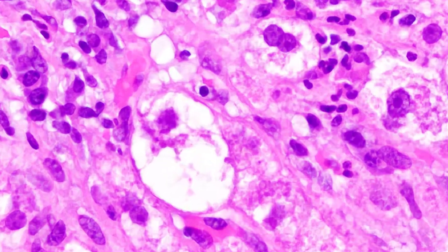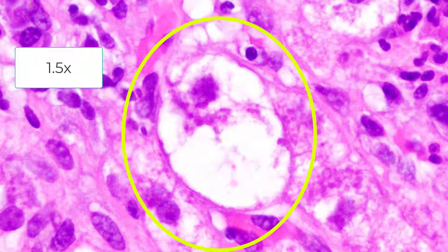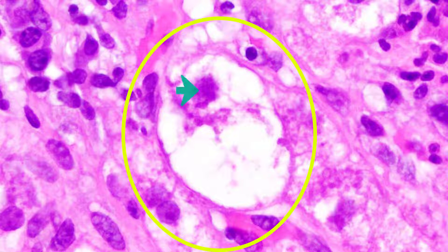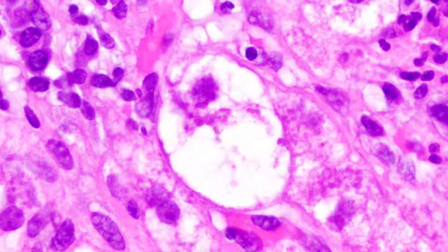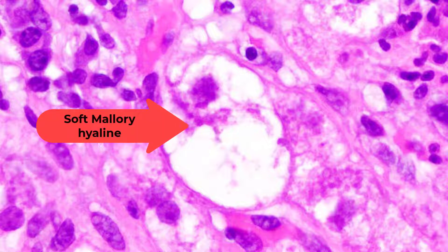Here's a classic balloon cell. It's enlarged — more than 1.5 times the size of an adjacent normal hepatocyte; here it's more than three times the size. Typically, the nucleus is centrally located. And importantly, there's condensation of the cytoplasm, leaving clear areas, with the condensed area typically around the nucleus. At times it looks rather dense and ropey, resembling what is often referred to as soft Mallory hyaline.